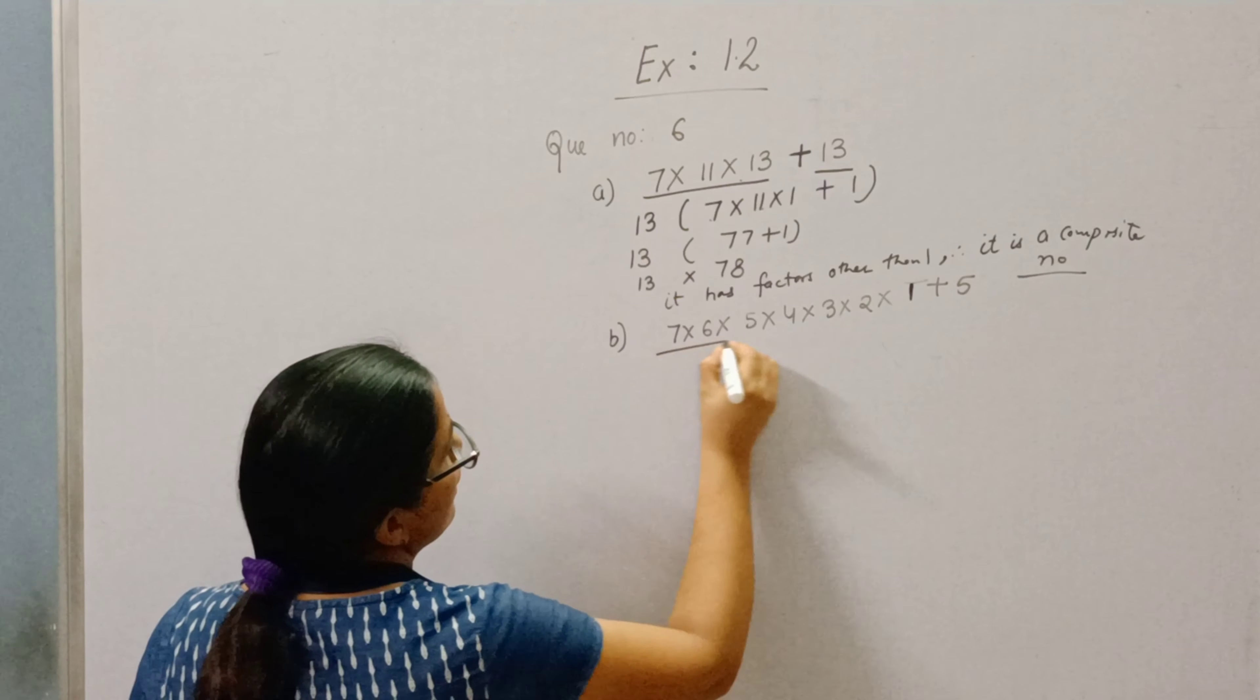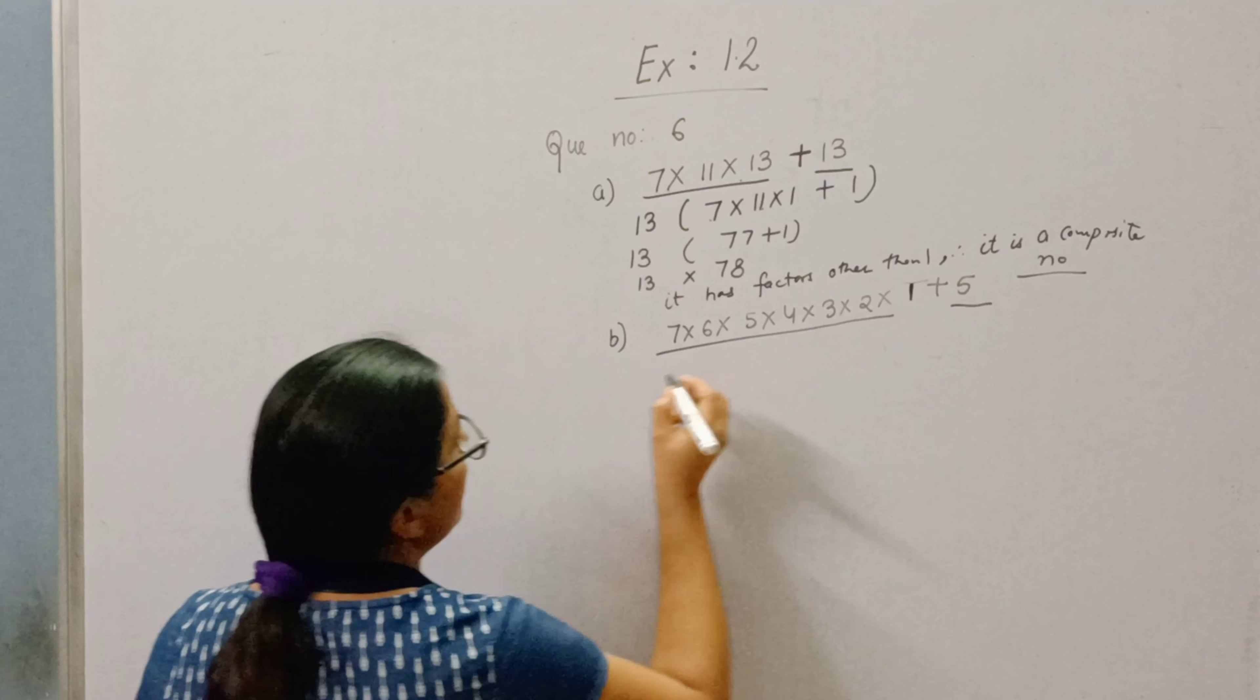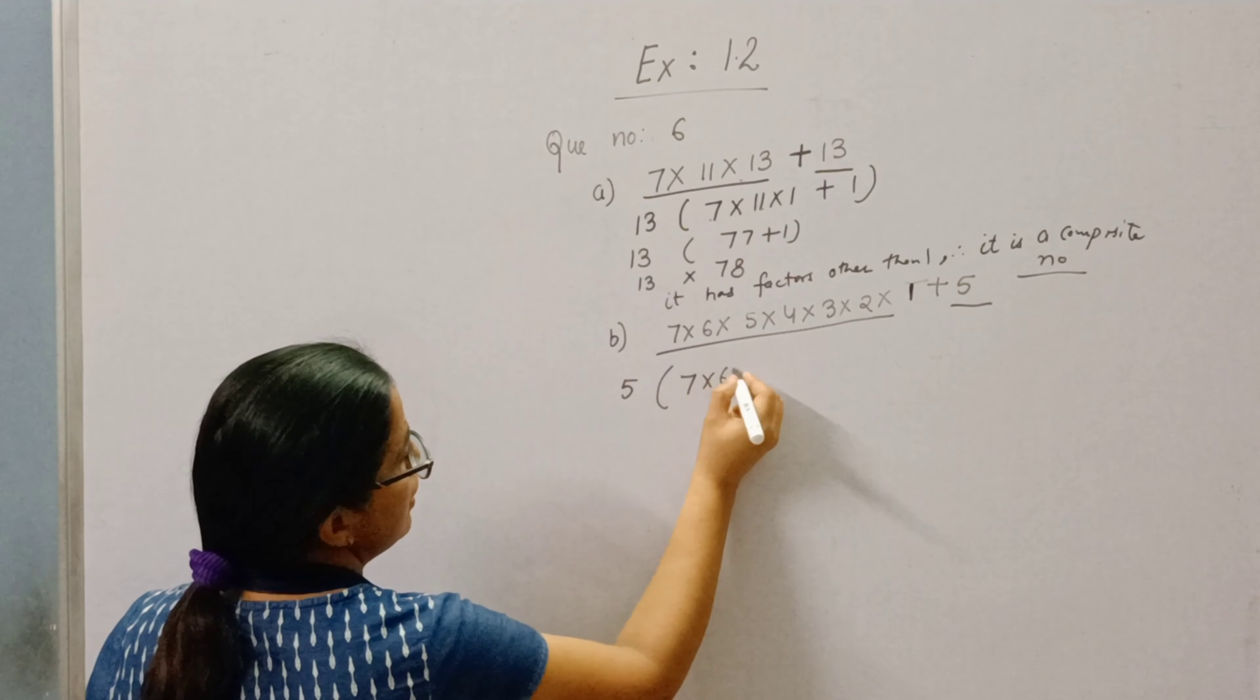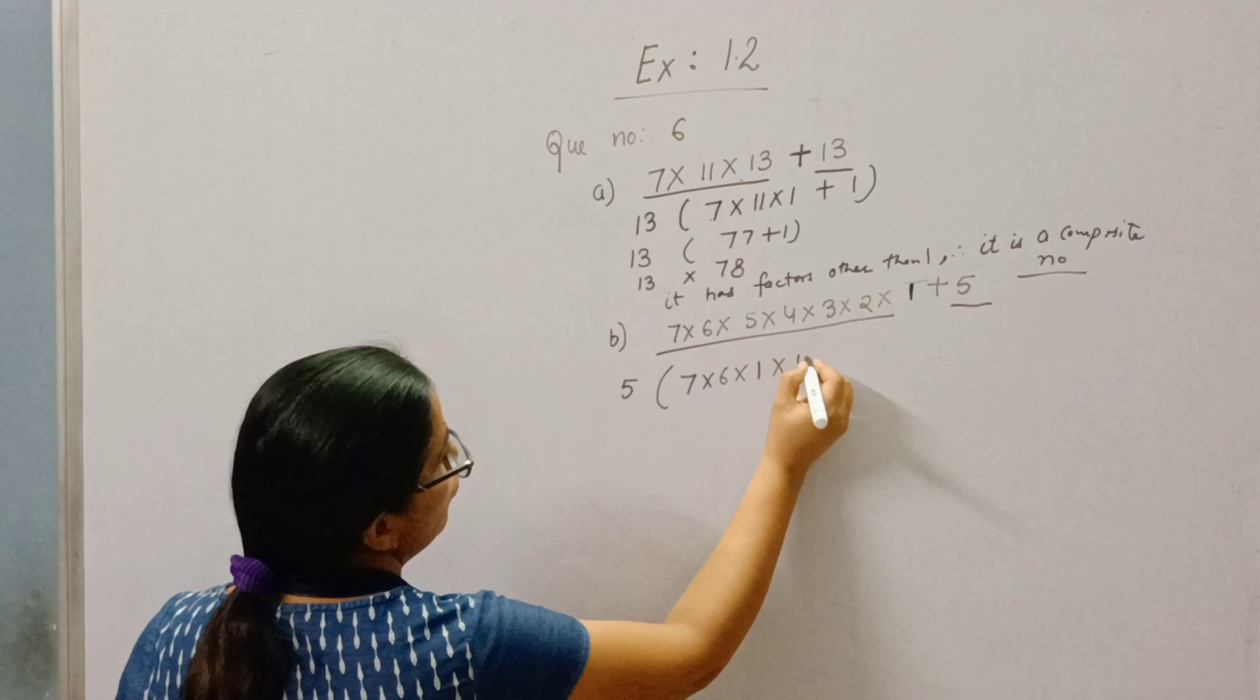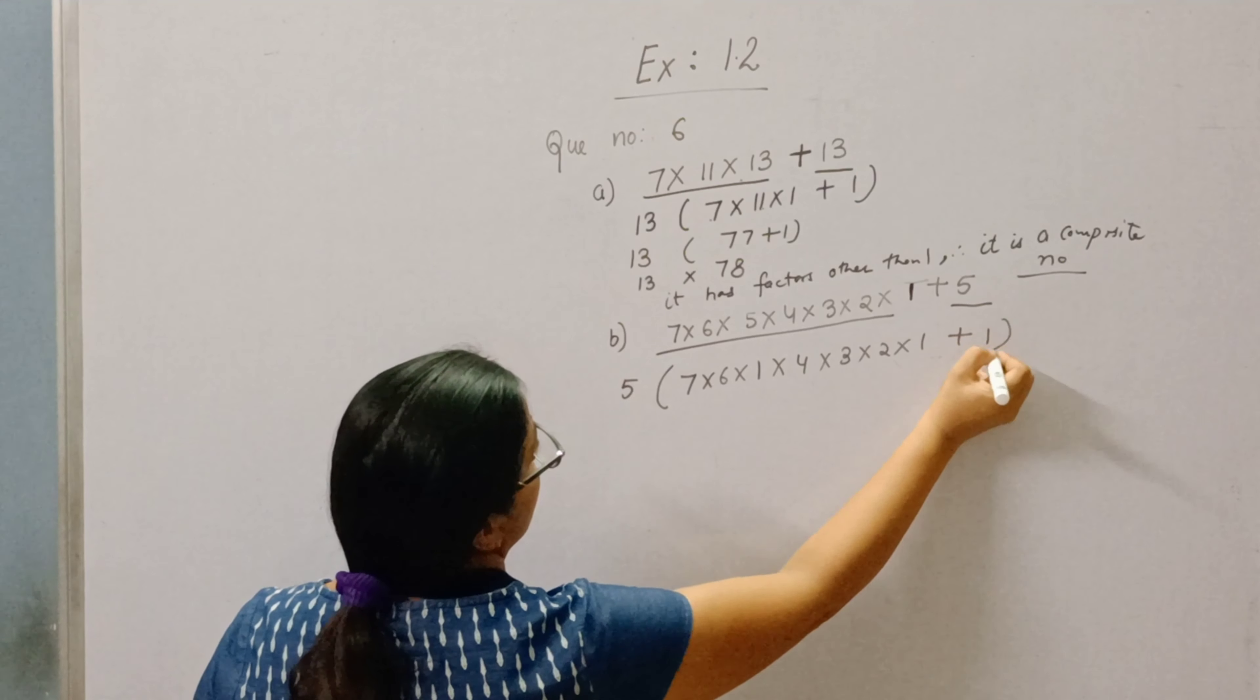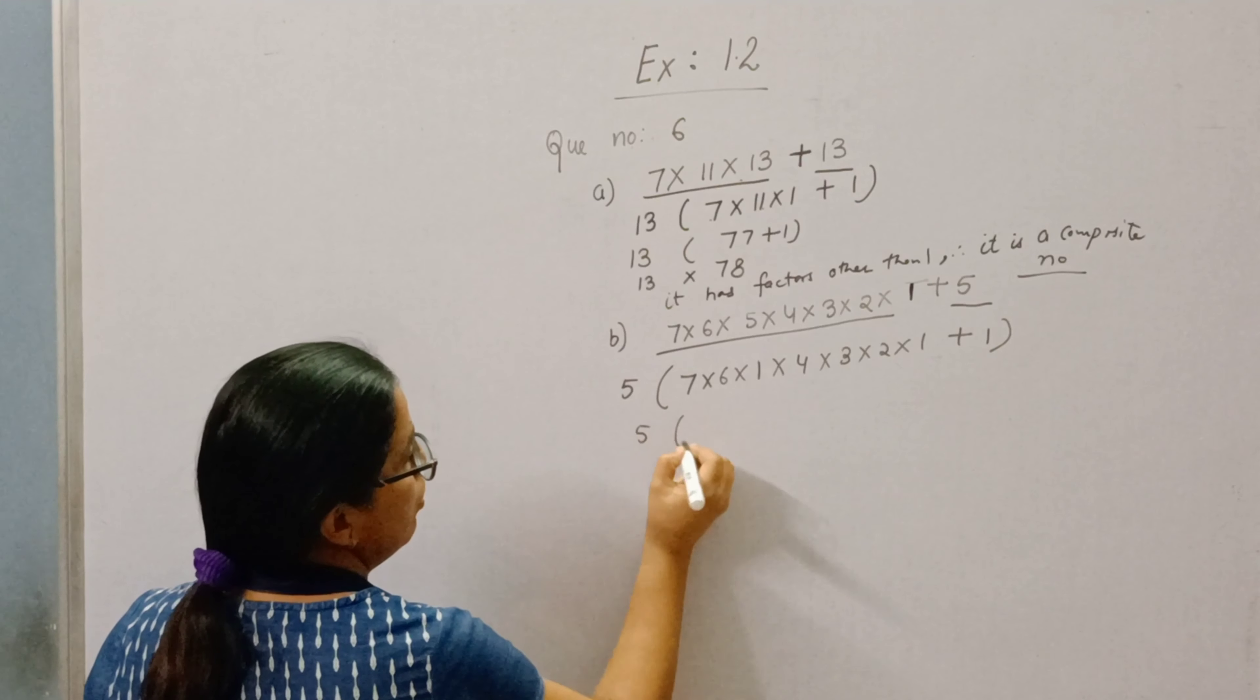In the same way, look here. There are two terms. Take out 5 as a common: 7 into 6 into 1 into 4 into 3 into 2 into 1 plus 1. Now multiply all this.